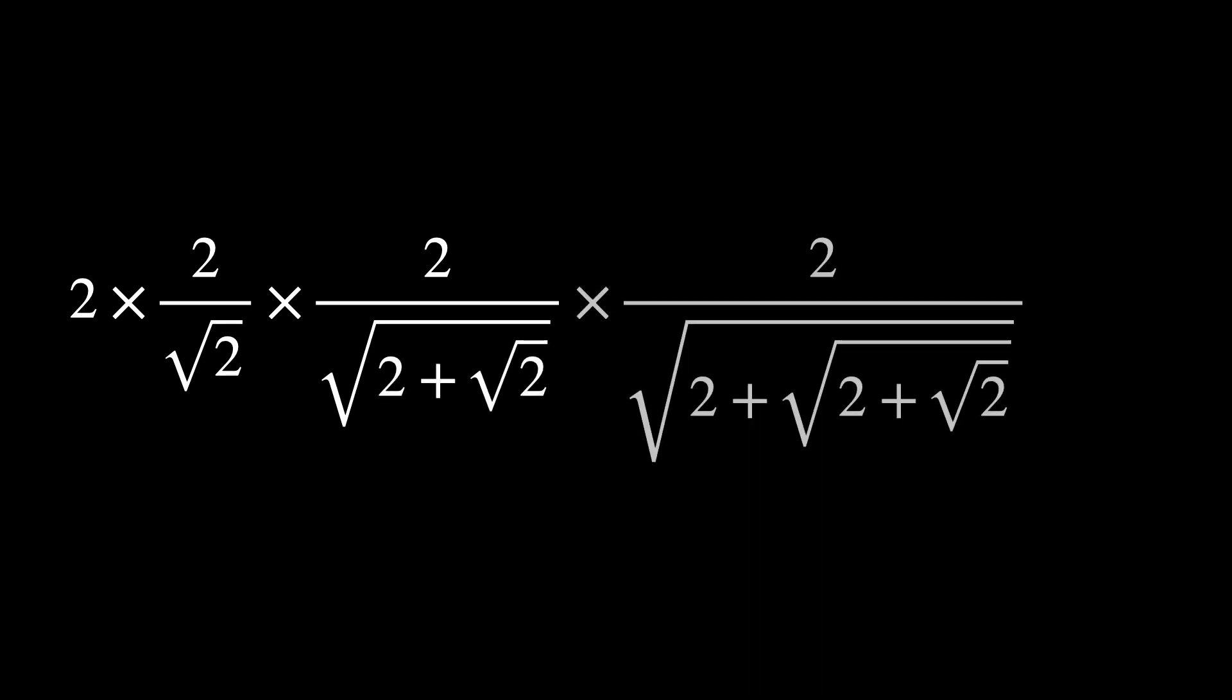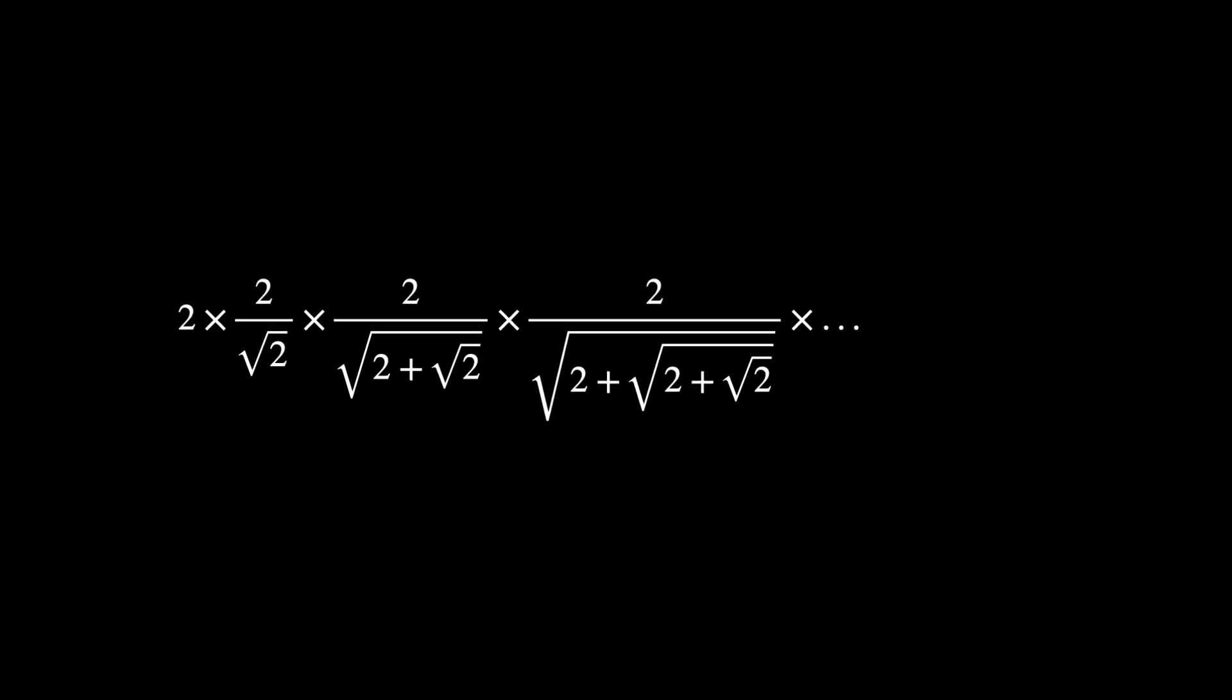2 times 2 over square root of 2, times 2 over square root of 2 plus square root of 2, and on and on. What would this nested sum equal to? What if I tell you, it actually equals to pi?